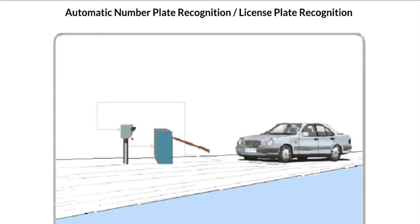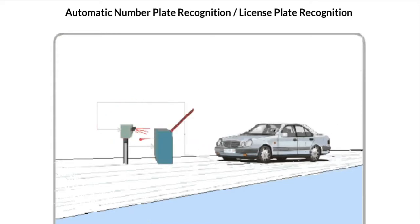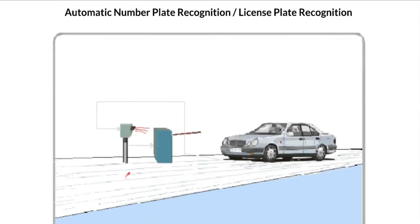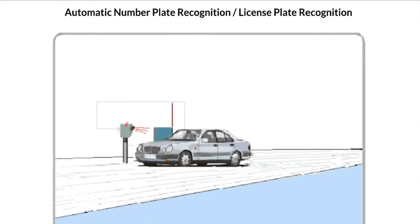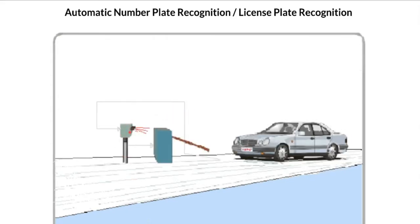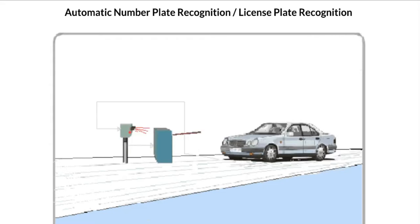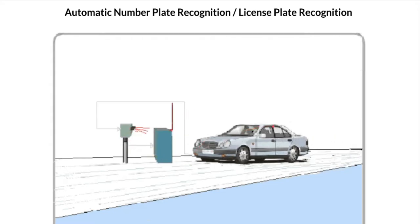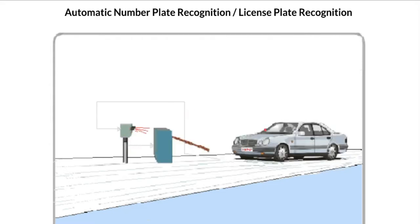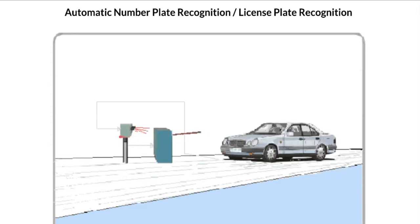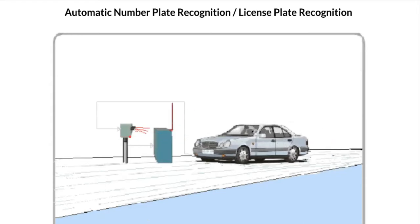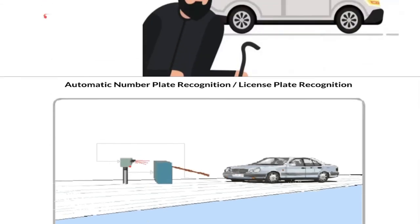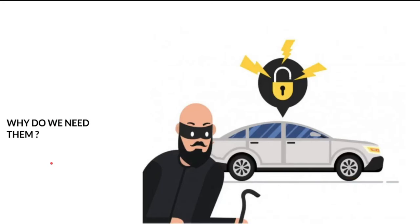If the image matches, it opens the gate and the car can enter the building. That is basically how LPR works. The technologies used are a camera and image processing software — the camera takes pictures of the license plate and the driver's face, while the image processing software processes and understands the image.